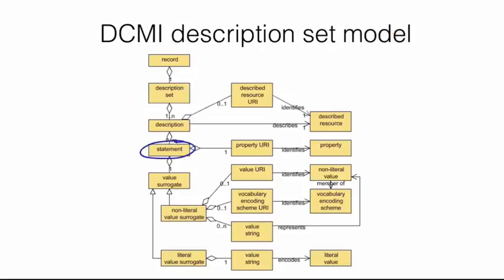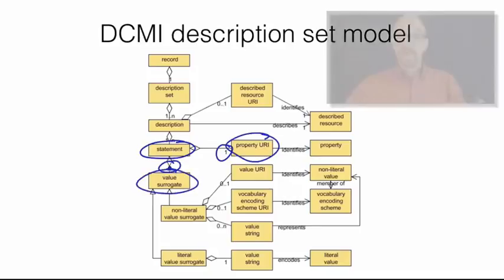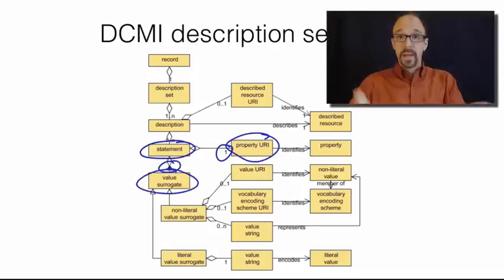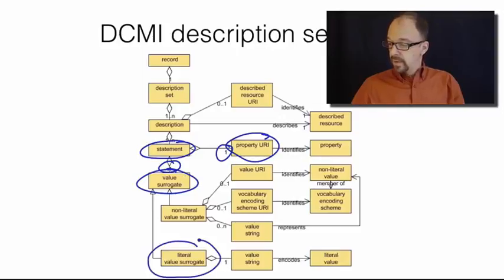So, a single statement has one property and one value. We're back to element value pairs, although in this diagram it's called property instead of element, but it's essentially the same thing. Element value pairs make up a statement, then a value has both a literal and a non-literal.